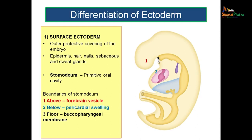This buccopharyngeal membrane will be rupturing in future so that there will be communication between the oral cavity, formed from the stomodium, and the primitive gut tube. As you look closely at this buccopharyngeal membrane, you can see that it is formed by only two layers: one is the ectodermal layer and the other is the endodermal layer of the gut — there is no intervening mesoderm. That is the importance of the buccopharyngeal membrane.